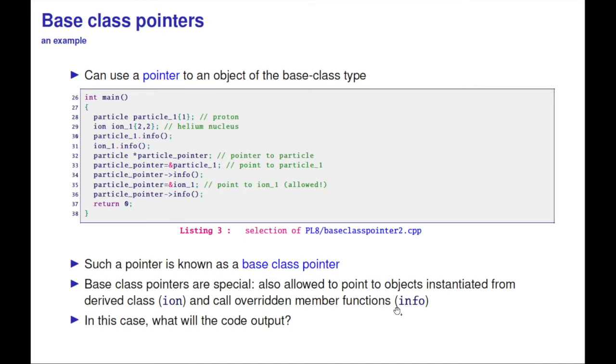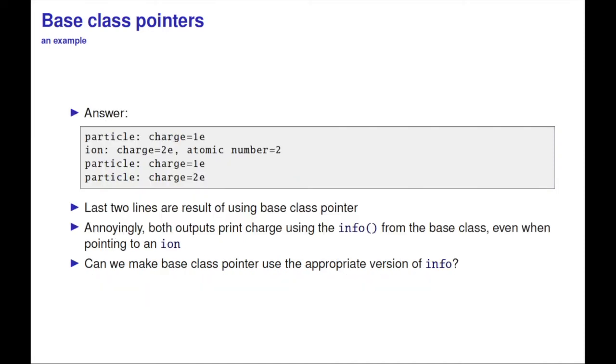But to call the overridden functions, we have to work a little bit harder. In this case, what will the code output? It outputs a particle charge as before, but when I call the two info functions on the pointer, unfortunately the second one calls the info function on the base class pointer. It's using the info from the base class even though it actually points to an ion.